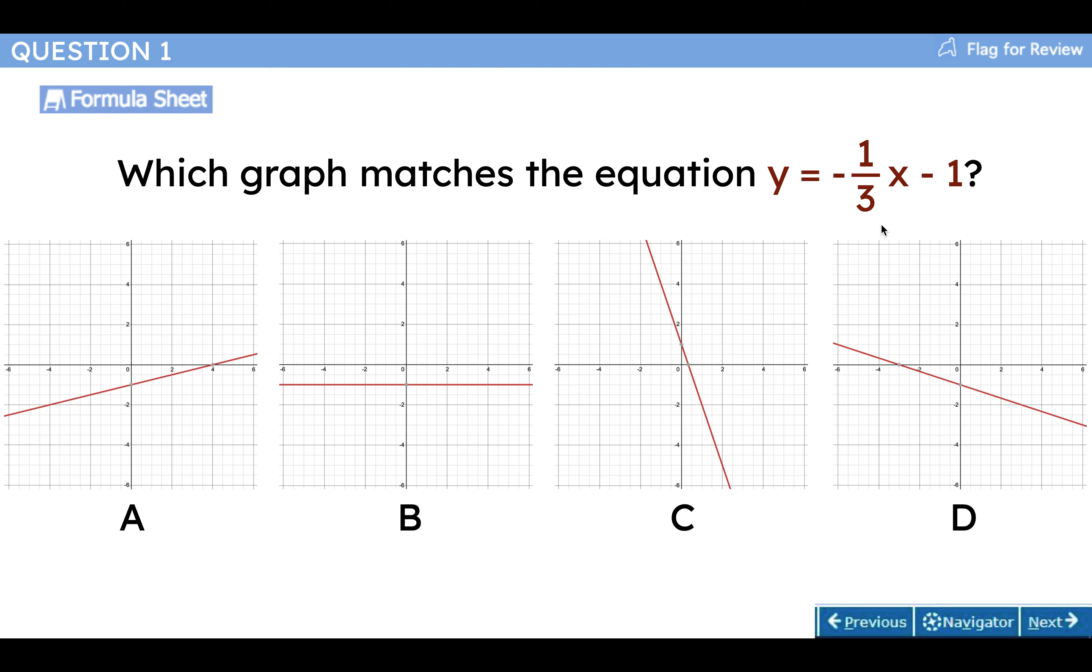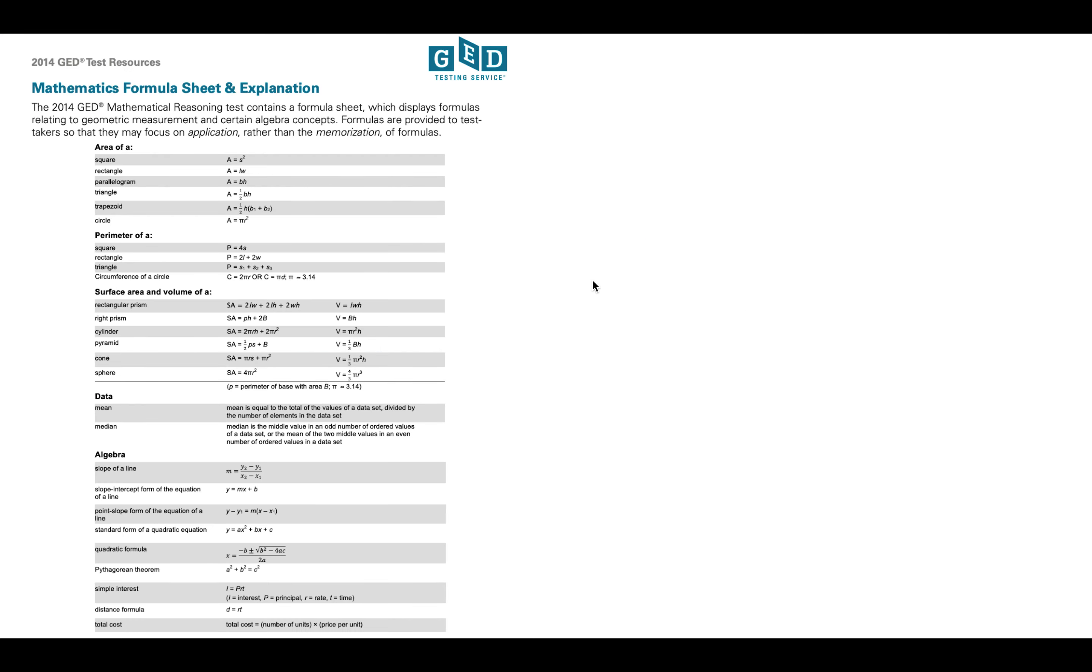The first thing I'm always going to do on every possible problem is eliminate the wrong answers. So I'm looking for things that are wrong. Three of these are wrong. All right, well, here's the formula sheet they give you. We're going to be focusing right here on this formula, y equals mx plus b.